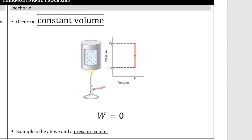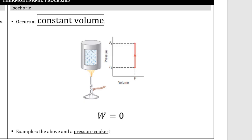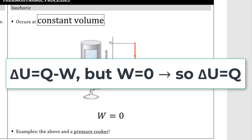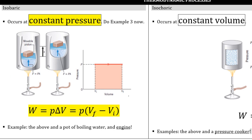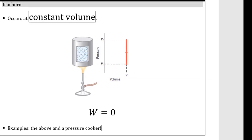Number two: an isochoric, or isovolumetric, process. Iso means same; choric refers to volume, so this is a constant volume process. I have a similar system, except this time there's no movable piston. If I add heat, all of that heat goes into increasing internal energy — no work is done because nothing can be pushed around. In the case of an isovolumetric process, heat can flow and internal energy can change, but no work happens. The PV diagram shows volume remaining constant while pressure can change. If I add heat, pressure increases, but no work occurs — there is no area under this graph. An isochoric process occurs with no change in volume and no work done on or by the system.